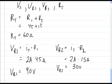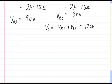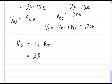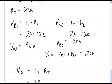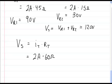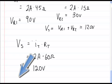Now I can find the supply voltage either by adding VR1 plus VR2 — which gives 90 plus 30 equals 120 volts — or by using the total current times total resistance: 2 amps times 60 ohms, which also gives 120 volts. You can use whichever method is easiest. I hope you enjoyed the video; if you did, please like it. I'll be making more videos, so please check them out. Thanks for watching.